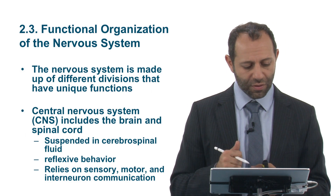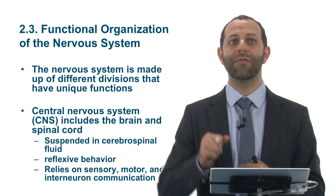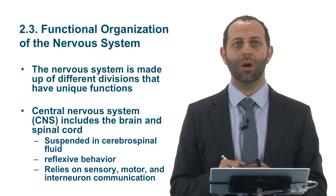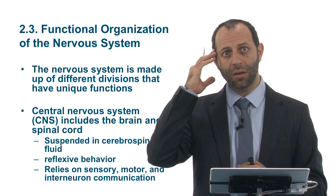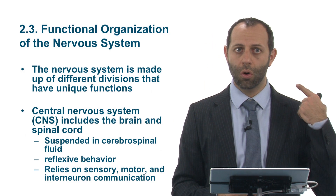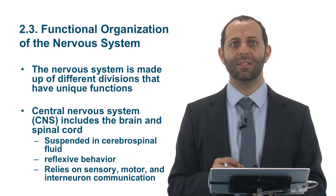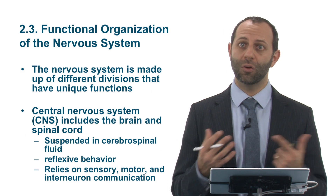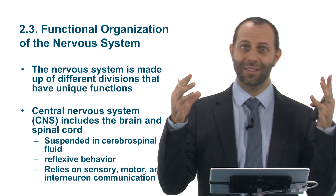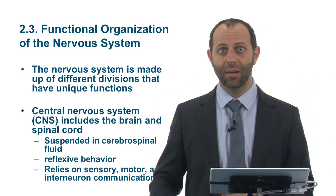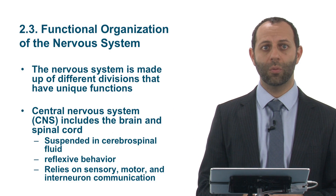The nervous system is made up of different divisions with unique functions. First is the central nervous system, or CNS, which includes the brain and the spinal cord. The CNS is suspended in cerebrospinal fluid, which acts almost like a cushion that protects the brain and spine if they get knocked around.